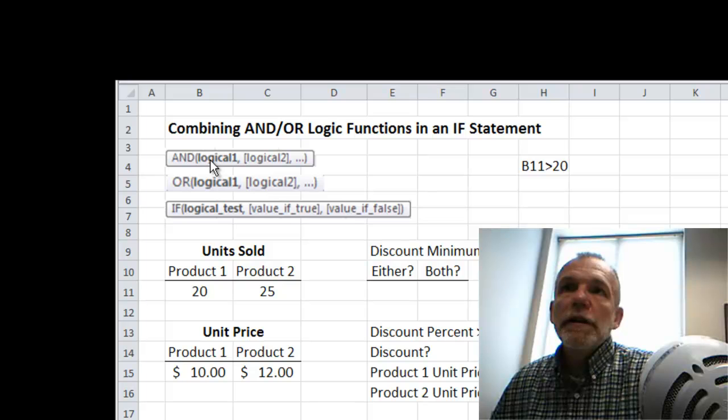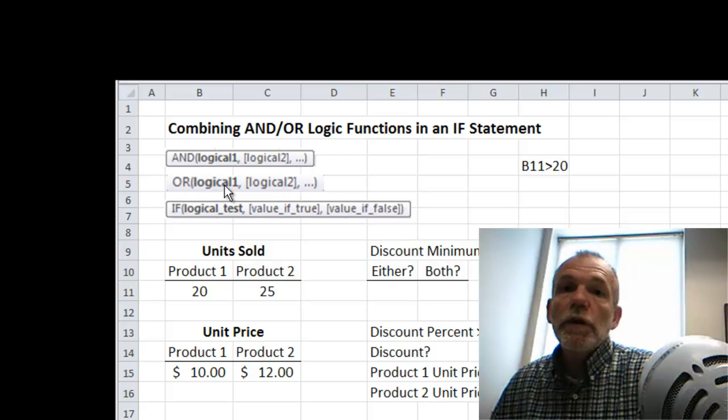If for the AND condition each logical that's checked, if they all return the value true, so every one of them is true, then the AND condition would evaluate as true. On the OR, we need just at least one of those logicals to return true for the OR to return a true.